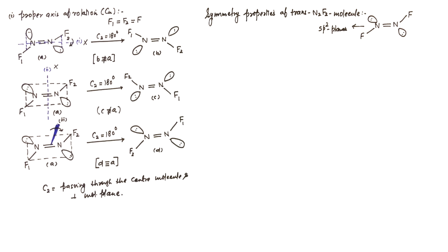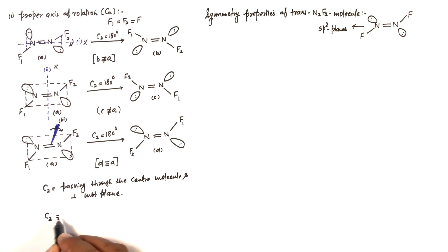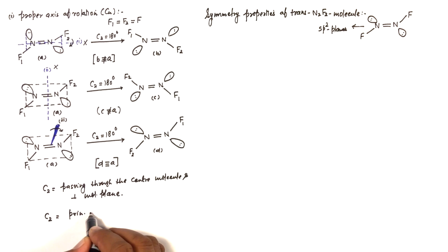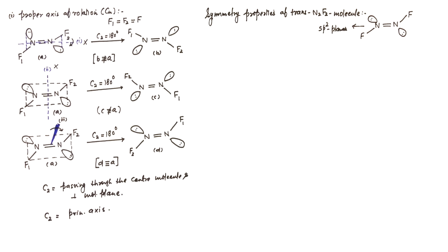This molecule has only one proper axis of rotation, which is C2. Since it is the only proper axis, we will also consider this C2 as the principal axis of rotation.